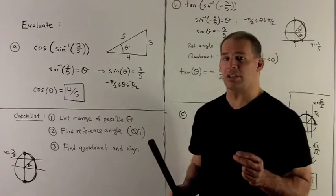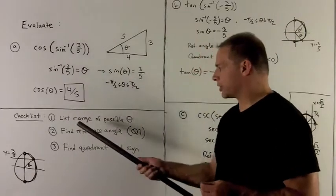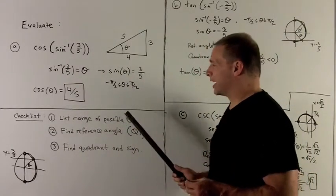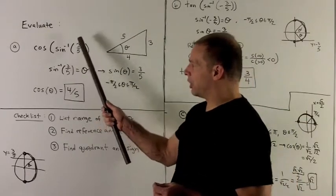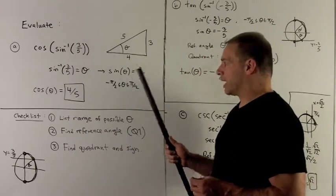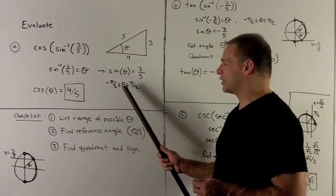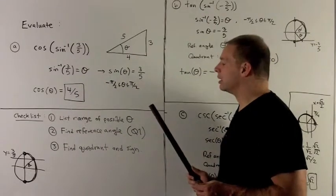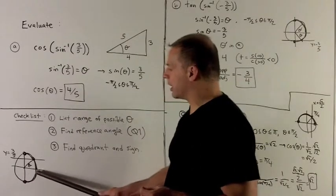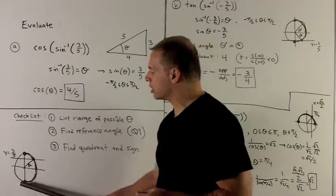Let's go to a checklist to enumerate the steps we need to proceed. The first thing I want to do is list the range of possible thetas. So I take a look at my function on the inside. That's inverse sine. By definition, the range of thetas that can show up for inverse sine are going to go from minus pi-halves to pi-halves. So if I'm drawing a picture, I'm going to start from down here and then I can go through any of the angles all the way up to there.